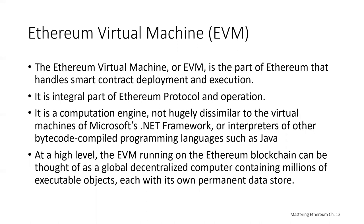The EVM is part of Ethereum and handles smart contract deployment and execution. Simple value transfer transactions from one wallet to another don't need to involve the EVM, but everything else that involves a state update — where you're calling a contract — is actually computed by the Ethereum virtual machine. You can think of the EVM running on the Ethereum blockchain as a sort of global decentralized computer containing millions of executable objects, each with its own permanent data store.